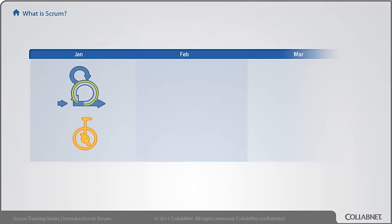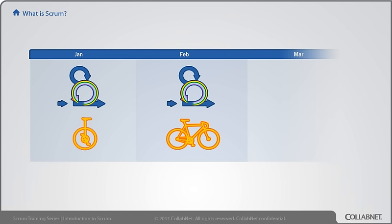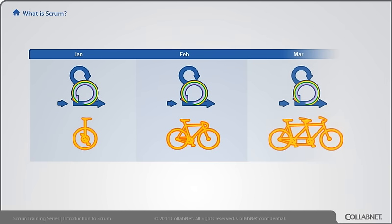Right from the first sprint, a Scrum team tries to build a working, tested, potentially shippable product increment, even if it starts out small. Every sprint they demonstrate what little bit of shippable product they have to everyone. Customers often need to see the wrong product before they can specify what they really need. With short iterations and more feedback, we have a better chance of discovering the right product. While the product owner doesn't have to ship every sprint, it's the team's job to make it possible.